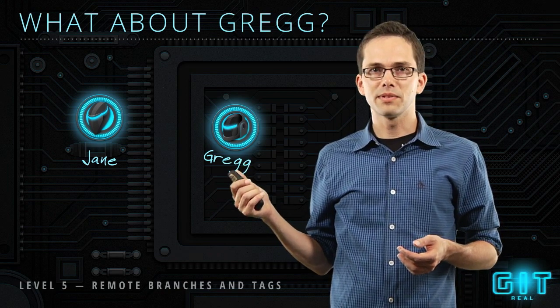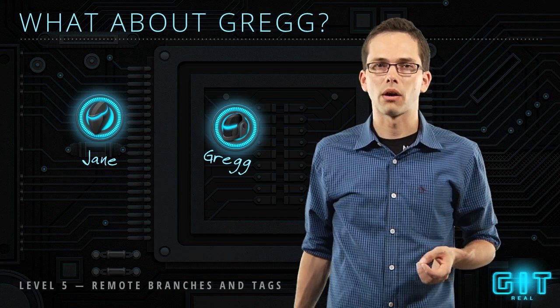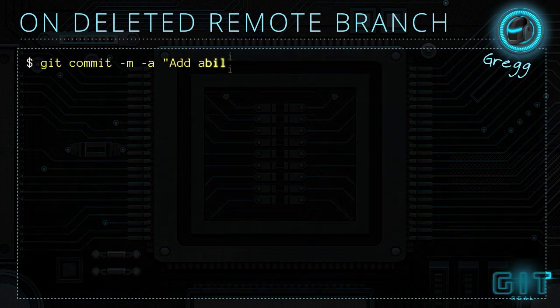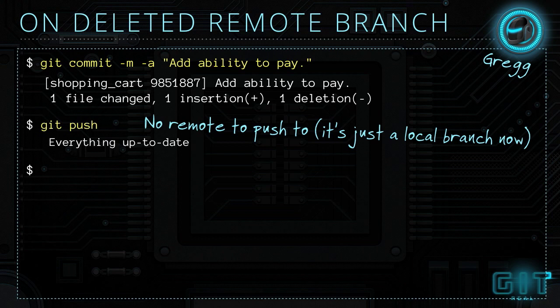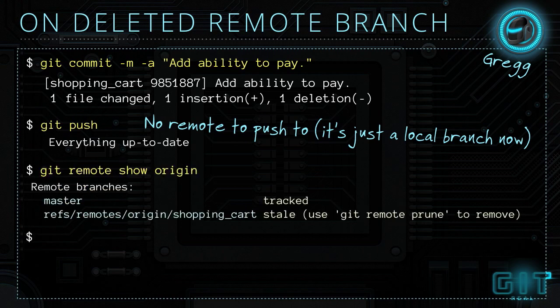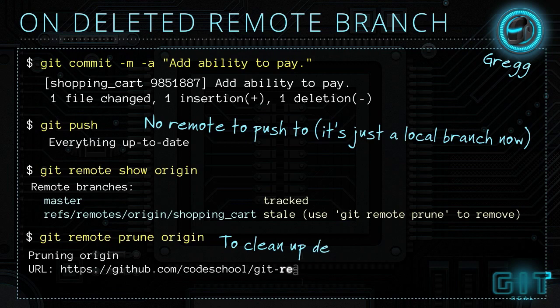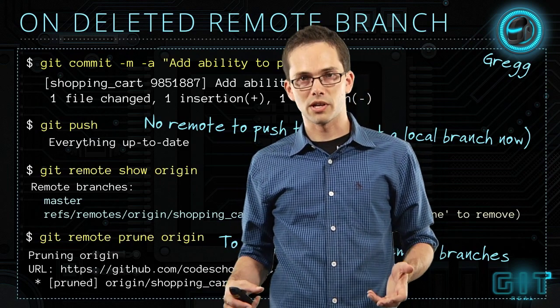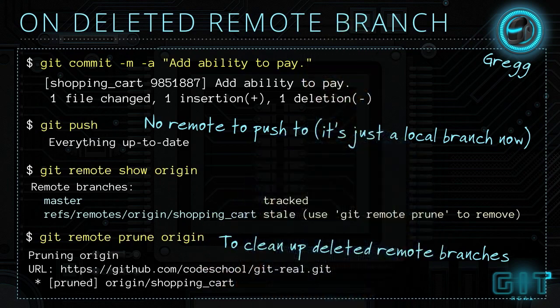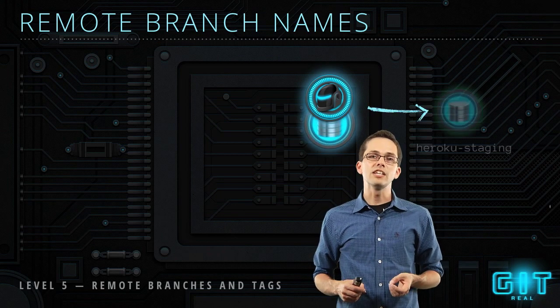Jane deleted the remote branch, but Greg created it originally — so what happens when he tries to push to that remote that no longer exists? Greg is working on the branch, commits something, tries to do a push, and nothing happens because the remote doesn't exist. He runs `git remote show origin` and sees that the shopping cart branch is stale — somebody deleted it. To remove that stale reference, he runs `git remote prune origin`, which cleans up all old stale branches. This is a command you'll want to run periodically on large projects with many remote branches.